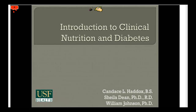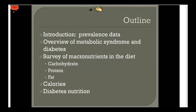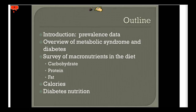Here are your learning objectives for future reference, and this is the outline. I'll be going over an overview of nutrition. We'll start with prevalence data that pertains to diabetes and obesity, then I'll give you an overview of metabolic syndrome and show you how diabetes fits into that. We'll go into each of the major macronutrients — carbohydrate, protein, and fat — quickly touch on calories, and then tie it in with diabetes.